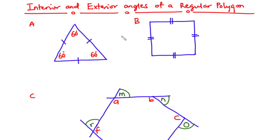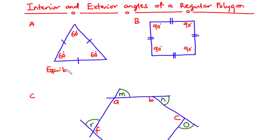In figure B, we have a square. A square has four equal sides and four equal interior angles which are 90 degrees each. We call this an equilateral triangle and figure B is a square.